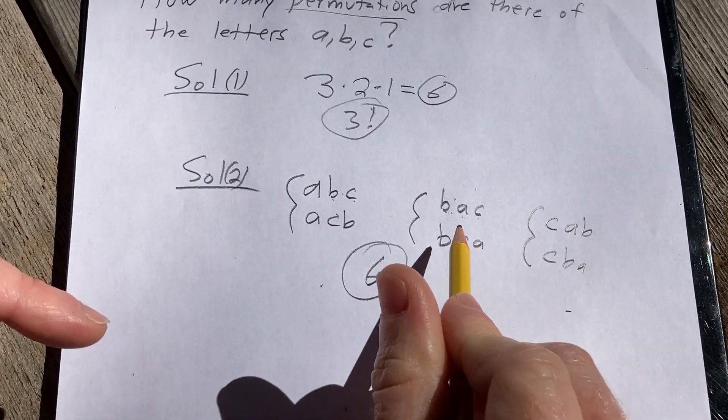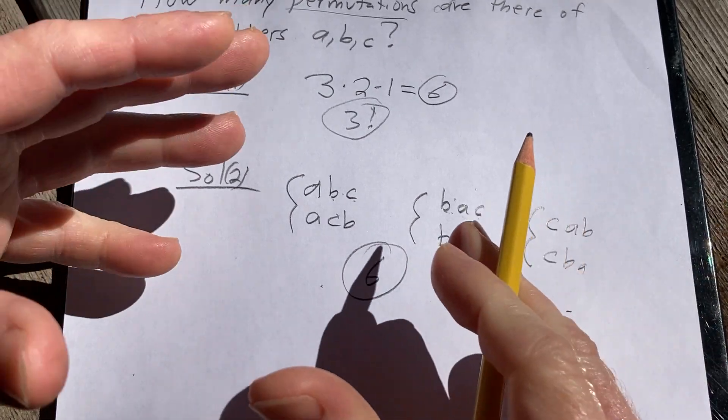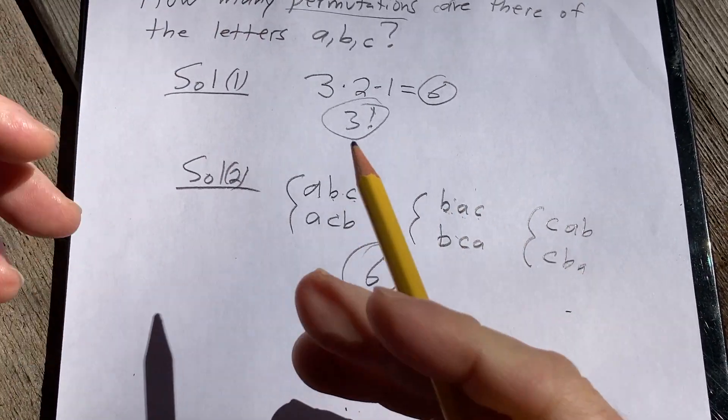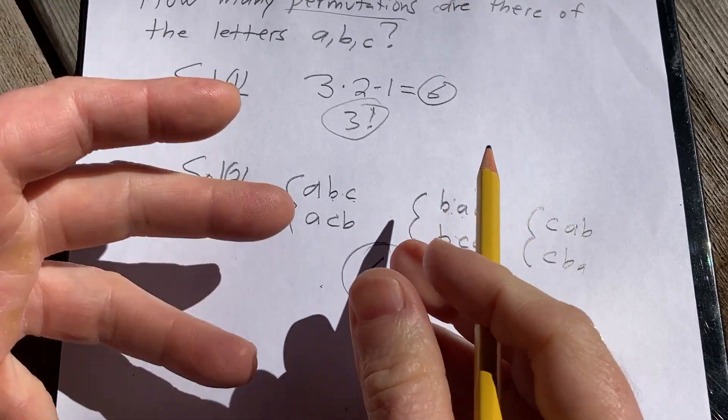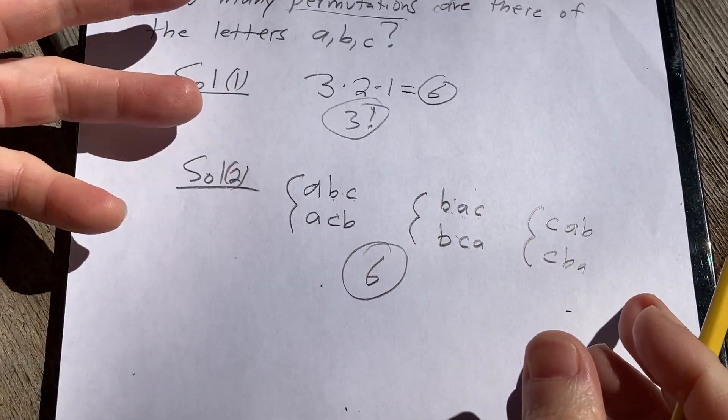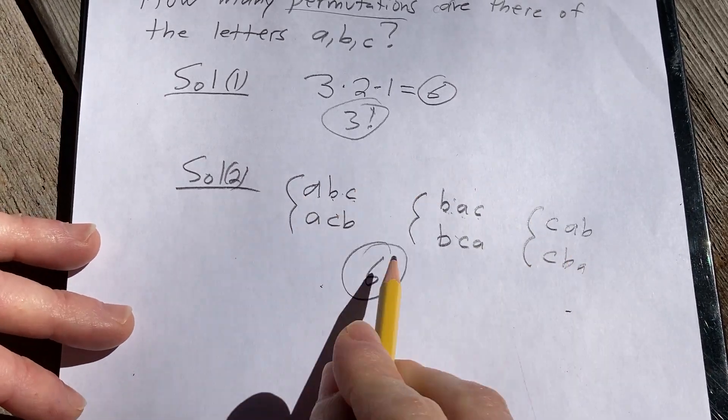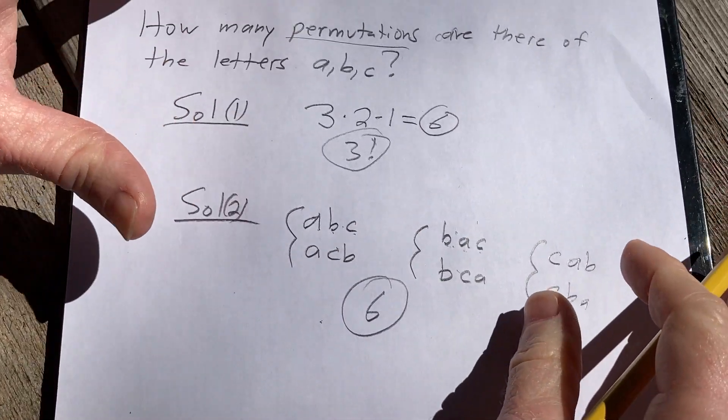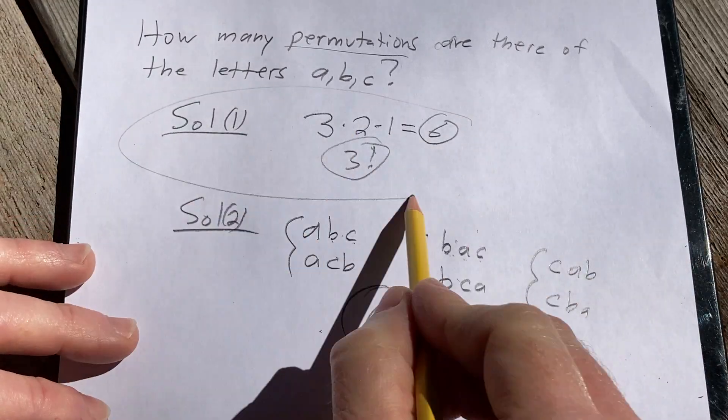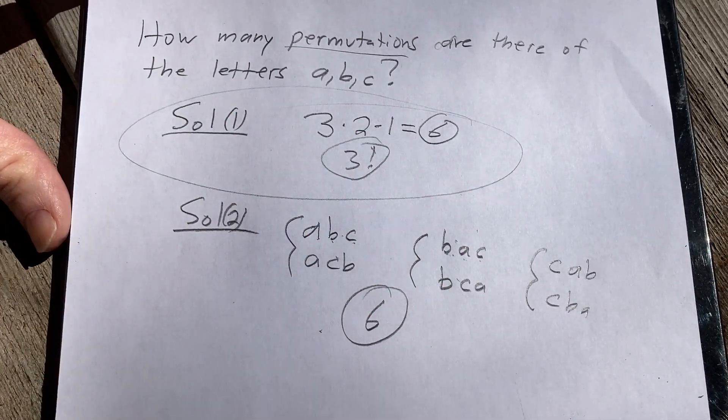Pretty cool, right? However, this will fail when the numbers get big. Well, it won't fail, but it becomes mentally taxing and difficult when you have 26 letters. And that would be 26 factorial, which is a very big number. So, you would actually have to list all 26 factorial ways, which is pretty ridiculous.